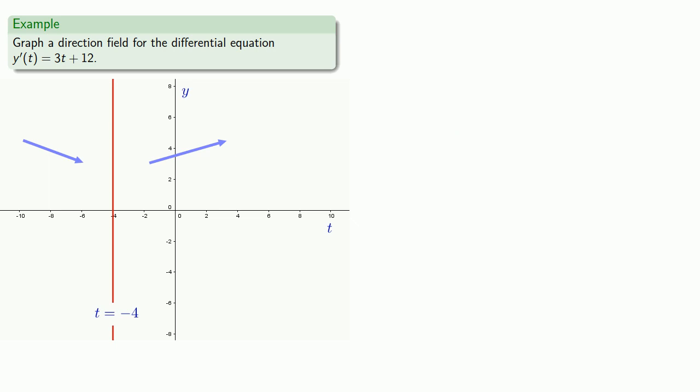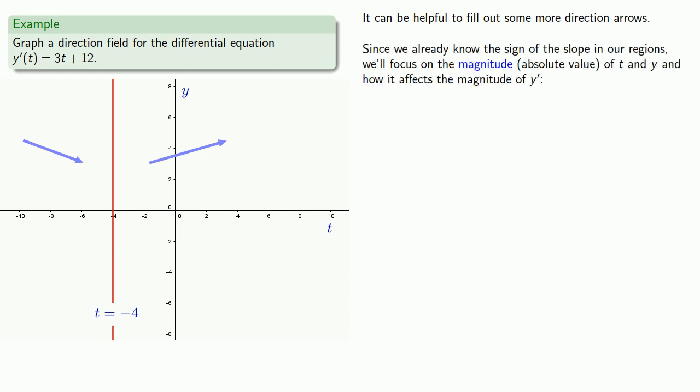Now, because the direction field is a field, it can be helpful to fill out more direction arrows. And here's an important idea. Since we already know the sign of the slope in our regions, we know it's positive over here and negative over here, which means our arrows are pointing up on this side and pointing down on this side, we'll focus on the magnitude, the absolute value, of t and y and how it affects the magnitude of y prime. The important idea here is that increasing the magnitude of t or y moves us away from the origin.